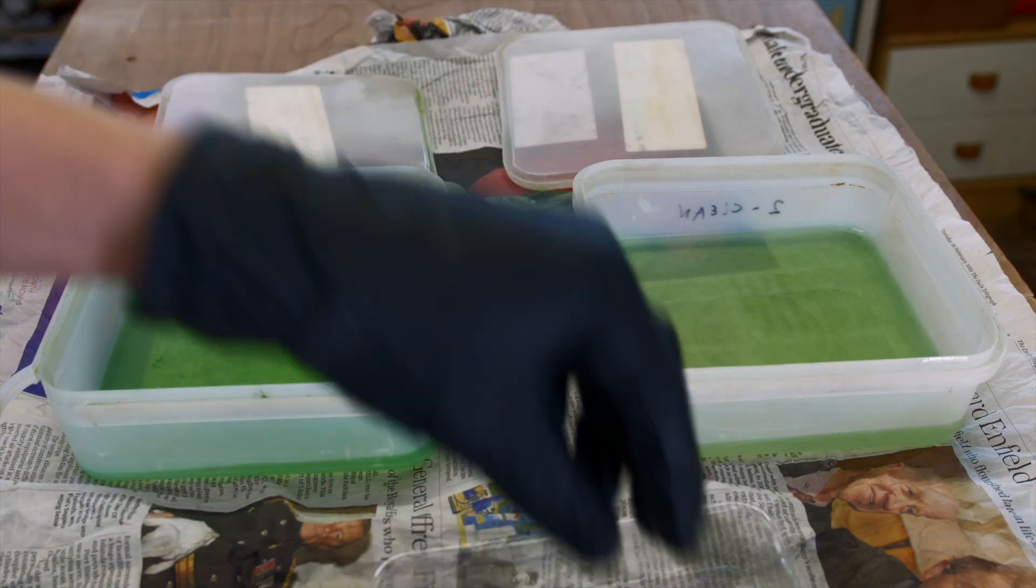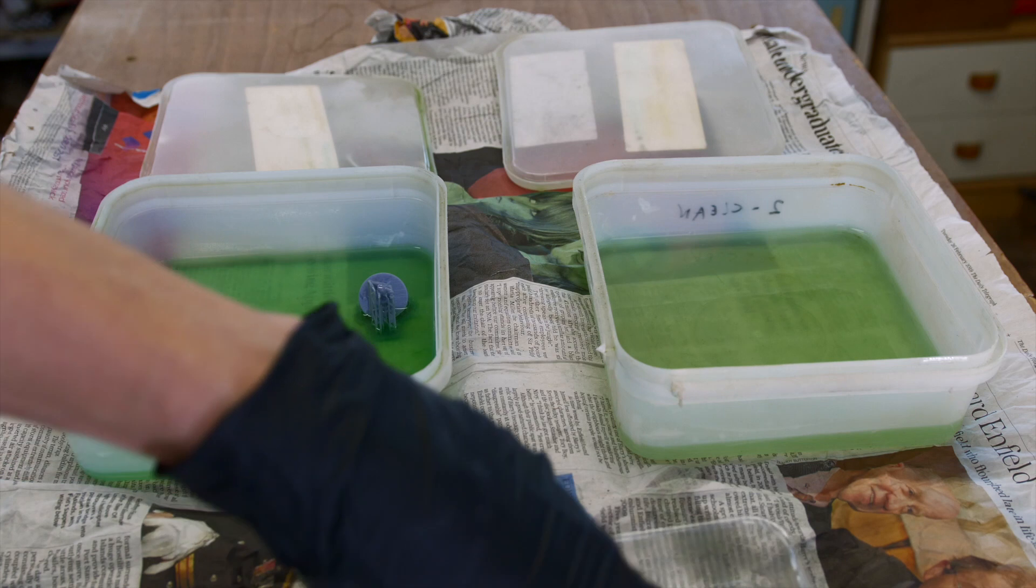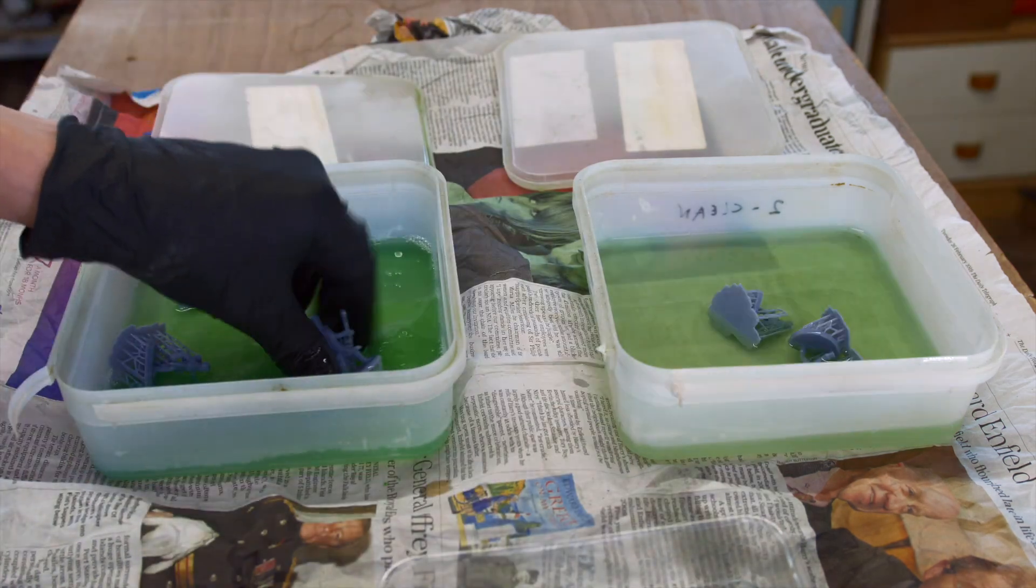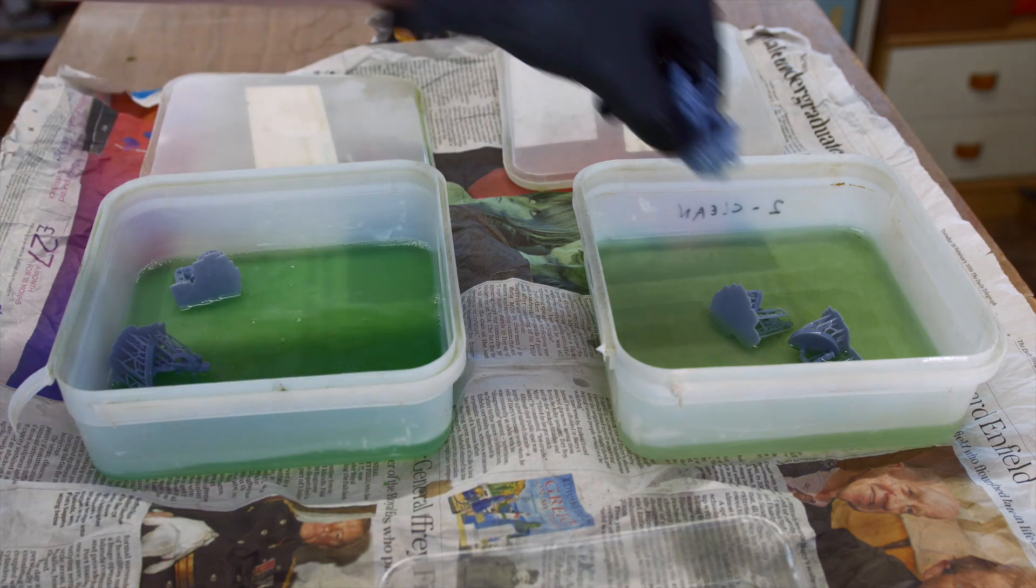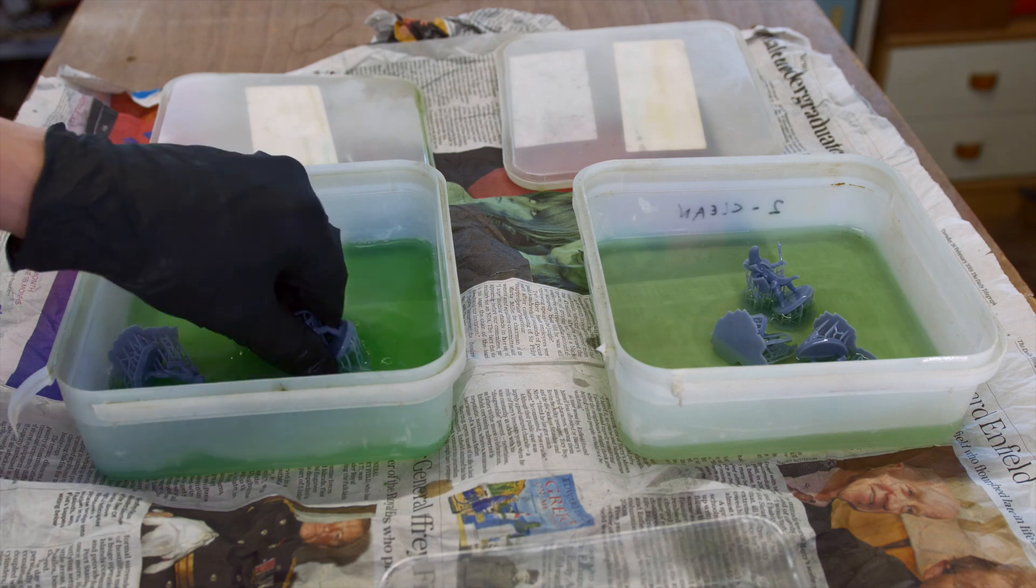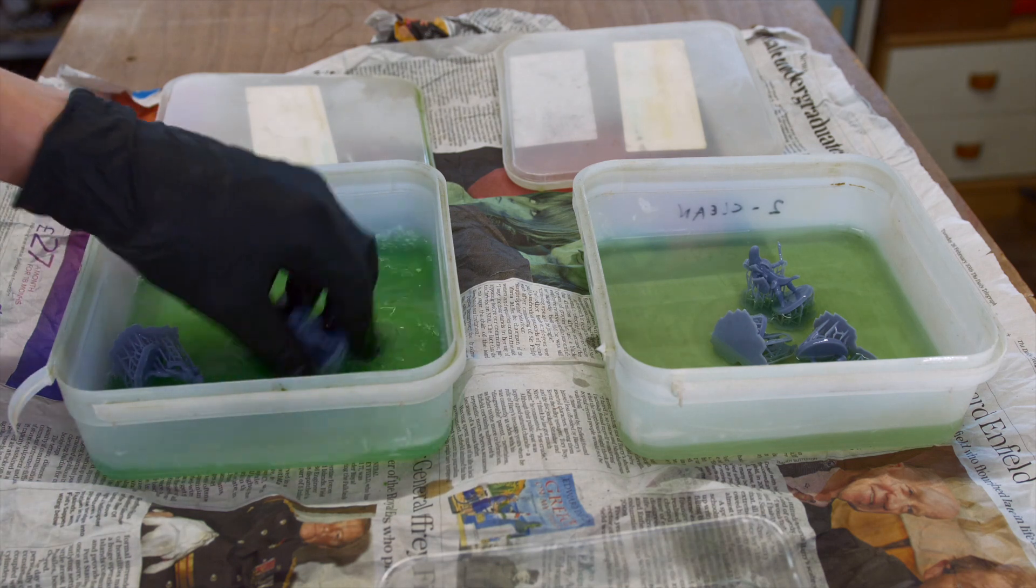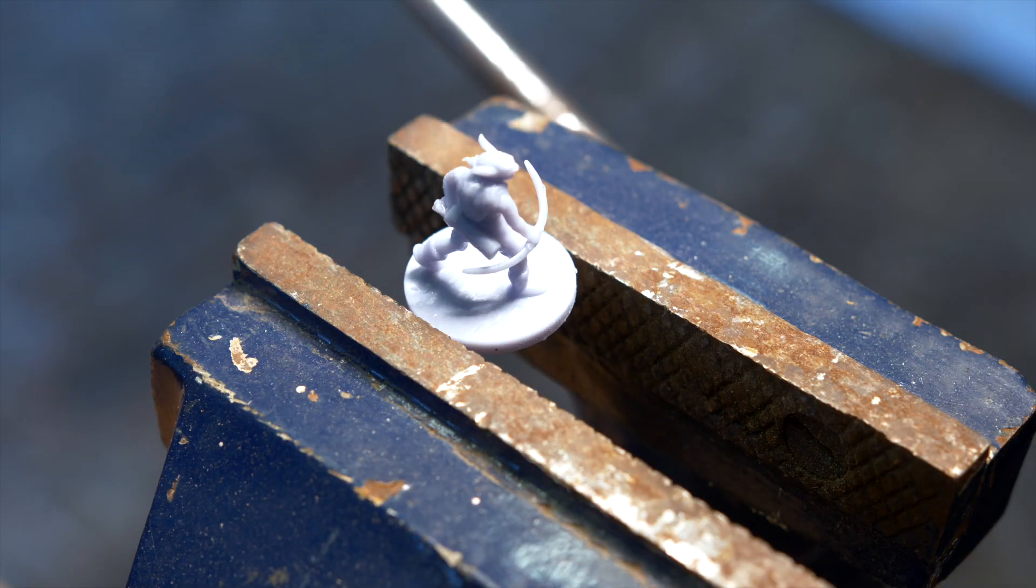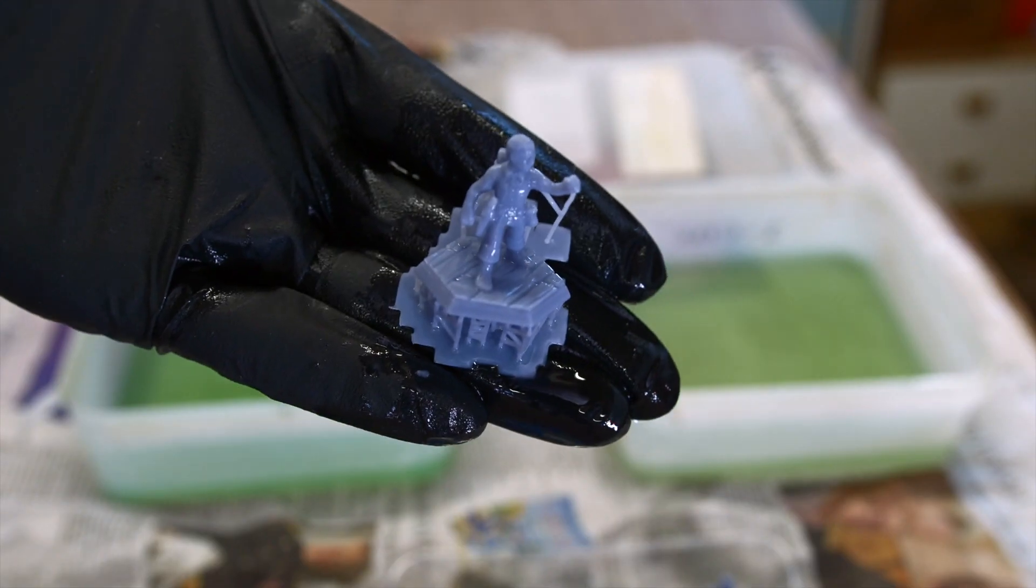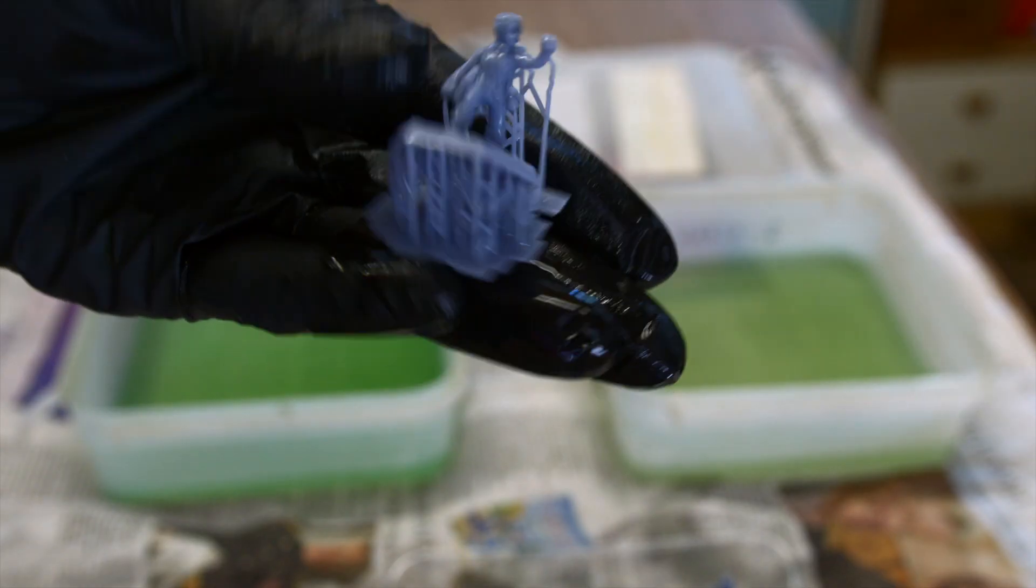As the prints are submerged in a bath of uncured resin they need some cleaning up after printing. This isn't difficult but you do have to purchase even more additional equipment not provided in the box. You need to wash the uncured resin off using rubbing alcohol and then you need to finish curing the prints either in the sun or with a cheap UV curing station. You'll also need to wear gloves and a mask when handling the resin or the uncured prints as it's sticky stuff.